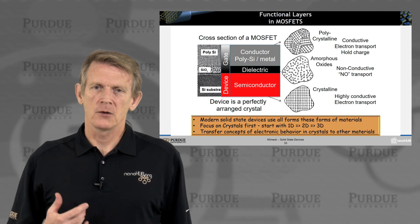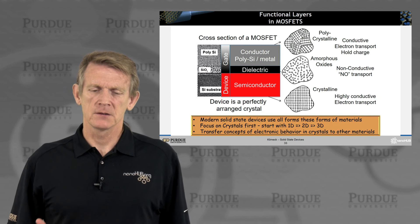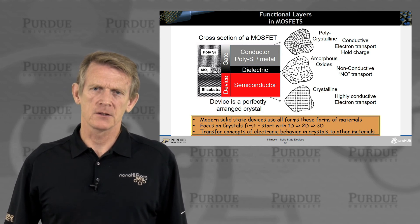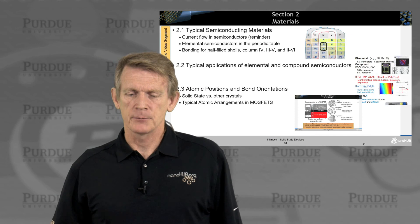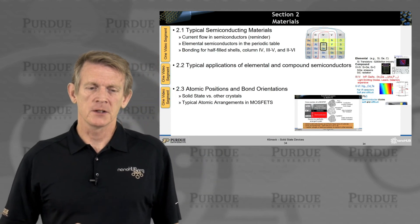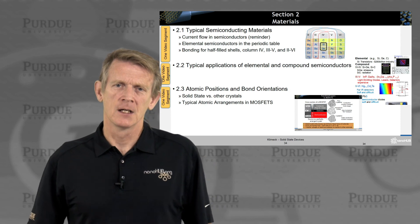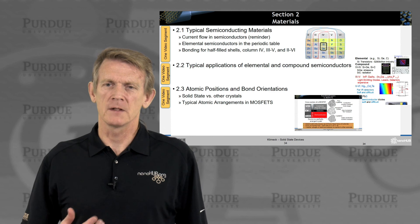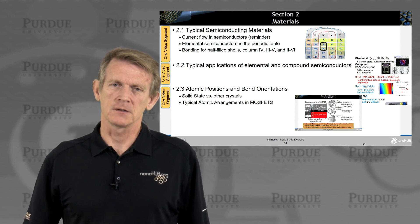There we'll start learning about 1D, 2D, and 3D representations of such crystals, and we want to understand how these crystalline structures ultimately impact the performance of these semiconductors. So that wraps up section two on materials, where we talked about typical materials, applications, and atomic positions and bond orientations, and motivated the next section, which will be dealing with crystals.